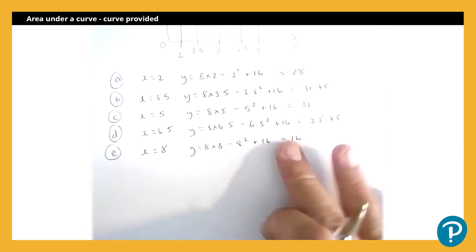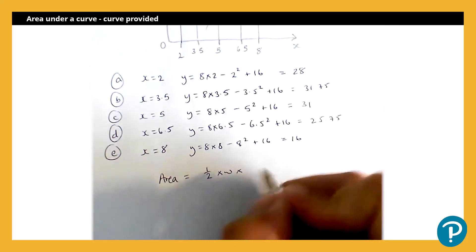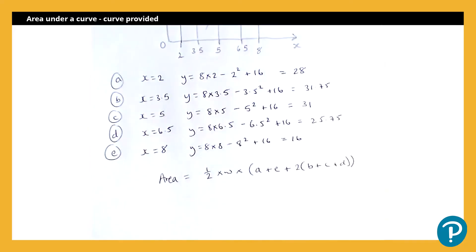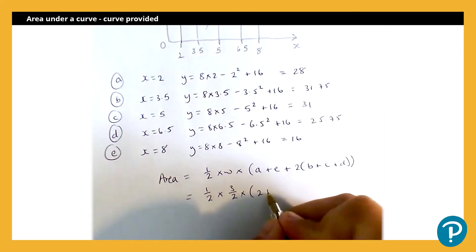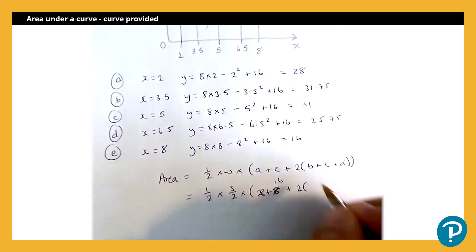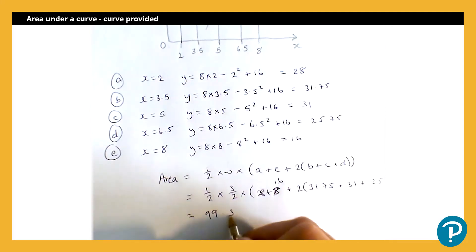So there are my values to plug into the trapezium rule. The area equals a half times the width times (a plus e plus two lots of b plus c plus d). With four strips rather than three, we have an extra value. That's a half times the width of 1.5, times (28 plus 16 plus two lots of 31.75 plus 31 plus 25.75). Putting that into the calculator gives us 99.375.